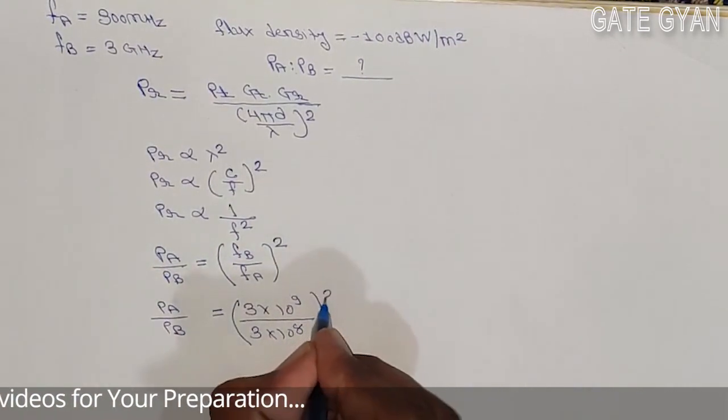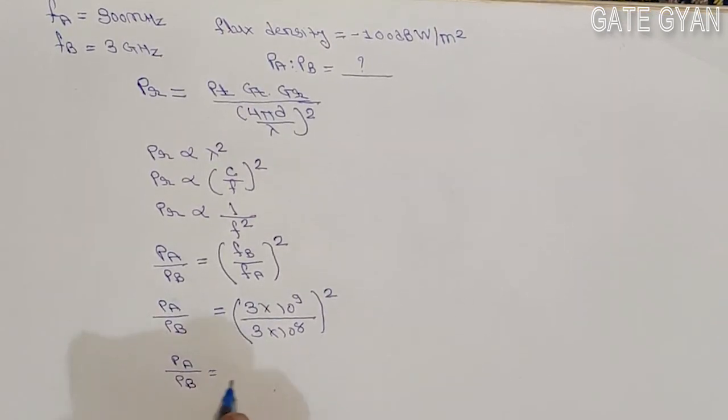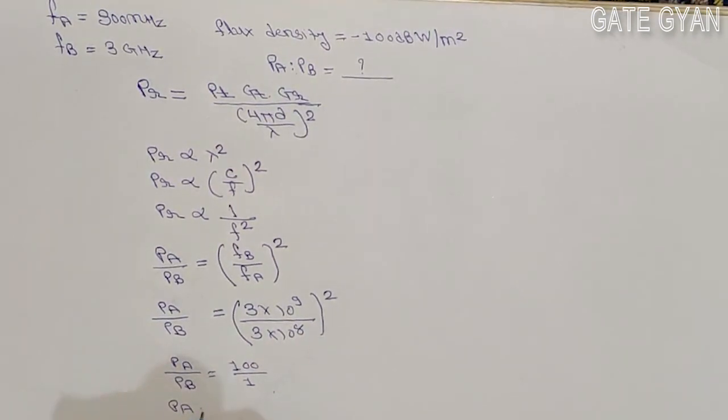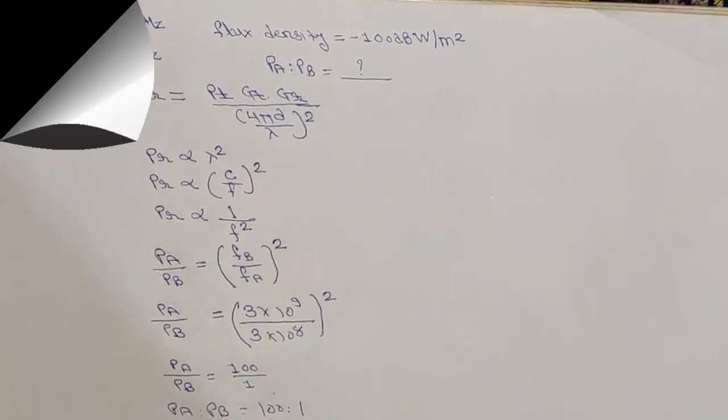So here we can find Pa to Pb is 100 divided by 1. So the answer is 100 is to 1. Thank you.